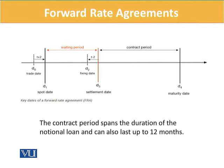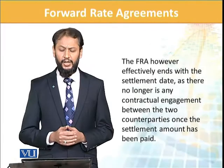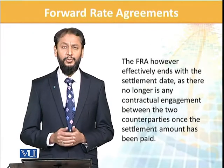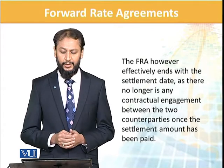तीन महिने बाद हमें पता लग जाएगा कि rate क्या है अगले छे महिने के लिए। Rather than waiting for the whole long period, settlement happens based on that contract period rate. As soon as the waiting period ends, the matter becomes clear and settlement takes place — as it relates to the next period. So there is a waiting period and a contract period.